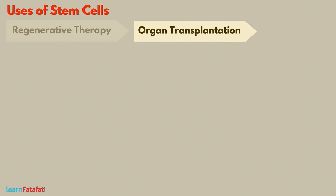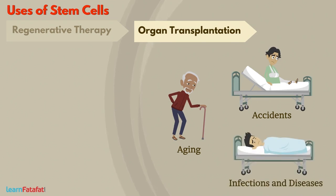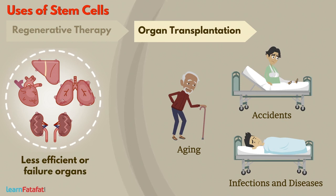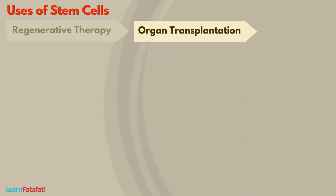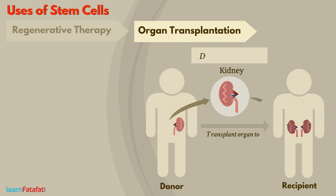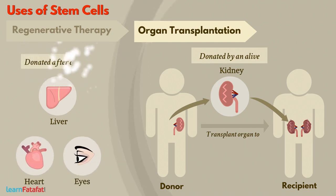Organ Transplantation: Due to various reasons such as aging, accidents, infection, and diseases, the organs of the body become less efficient or undergo failure. This situation could be life threatening. One way to solve this problem is to transplant the same organ from another person's body. These include organs such as the kidney, which can be donated by an alive individual. However, organs like the liver, heart, and eyes can only be donated after death.